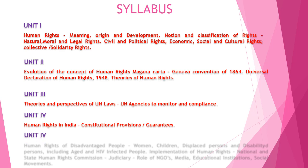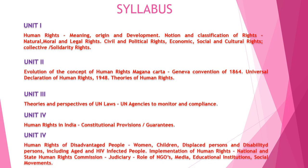In unit 5, we are going to discuss about the human rights of disadvantaged people - women, children, displaced persons, persons with disability, aged and HIV infected people. Then implementation of human rights through NHRC, SHRC, judiciary, role of NGOs, media, educational institutions and social movements. What are the human rights specified in these categories we are going to discuss in unit 5, as the last unit.